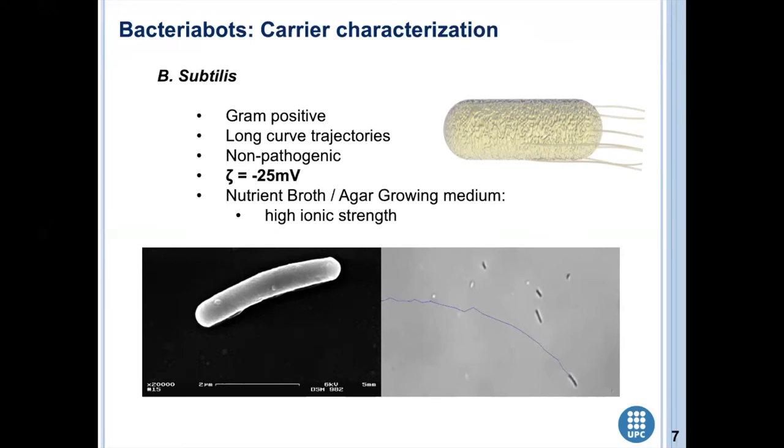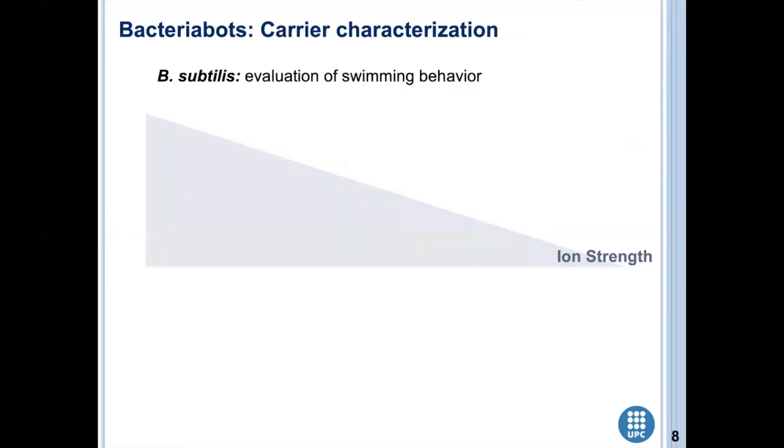We studied the swimming behavior considering this ionic strength content on the medium, and as well the cargo, the possible cargo attachment to the substrate. As I've said before, these bacteria grow in a high ion strength medium, but this will lead to cargo attachment to the substrate of analysis instead of to the bacteria. This is needed to be considered to develop in-between conditions in order to obtain efficient attachment.